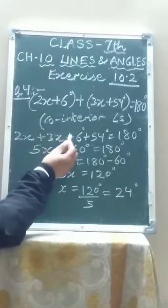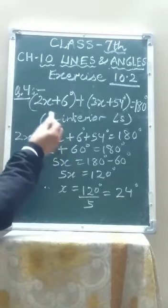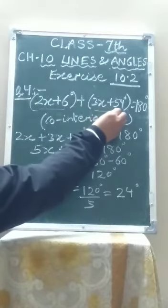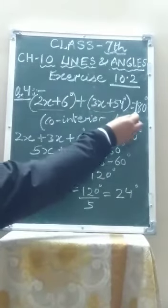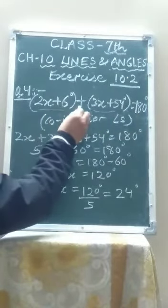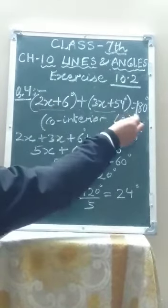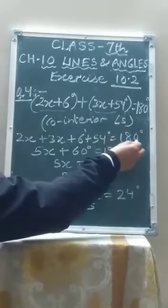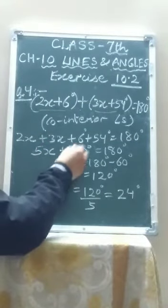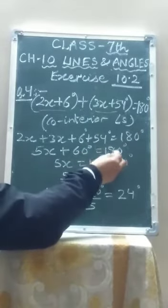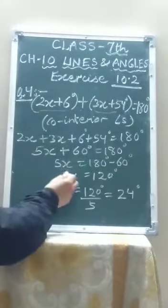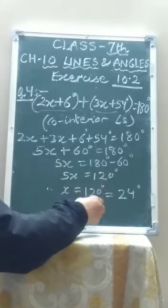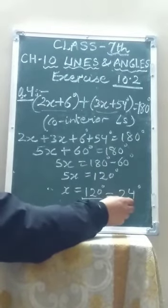Question number 4, first part. You can see the figure from the book on page number 208. The two unknown angles are co-interior angles: one angle is 2x plus 6 degrees and the other is 3x plus 54 degrees. Since they are co-interior angles, their sum is 180 degrees. So 2x plus 6 plus 3x plus 54 equals 180. Collecting like terms: 5x plus 60 equals 180. Shifting 60 to the right: 5x equals 120. Therefore x equals 120 divided by 5, which is 24 degrees.